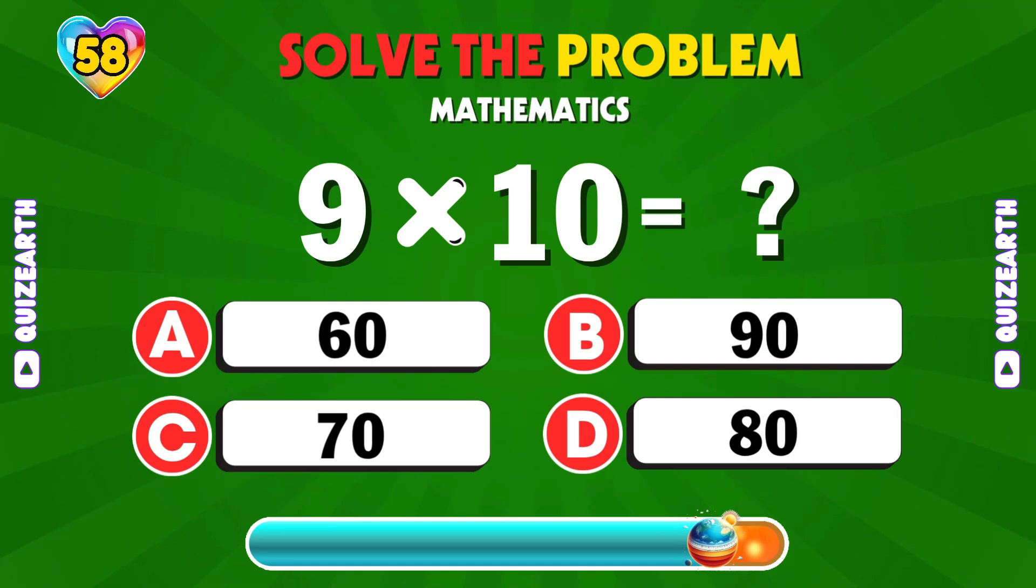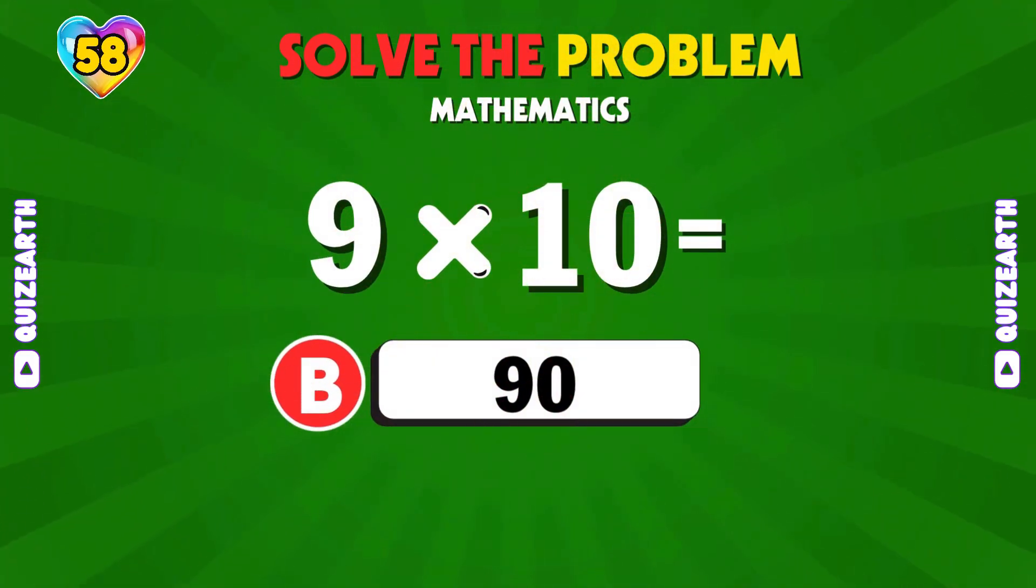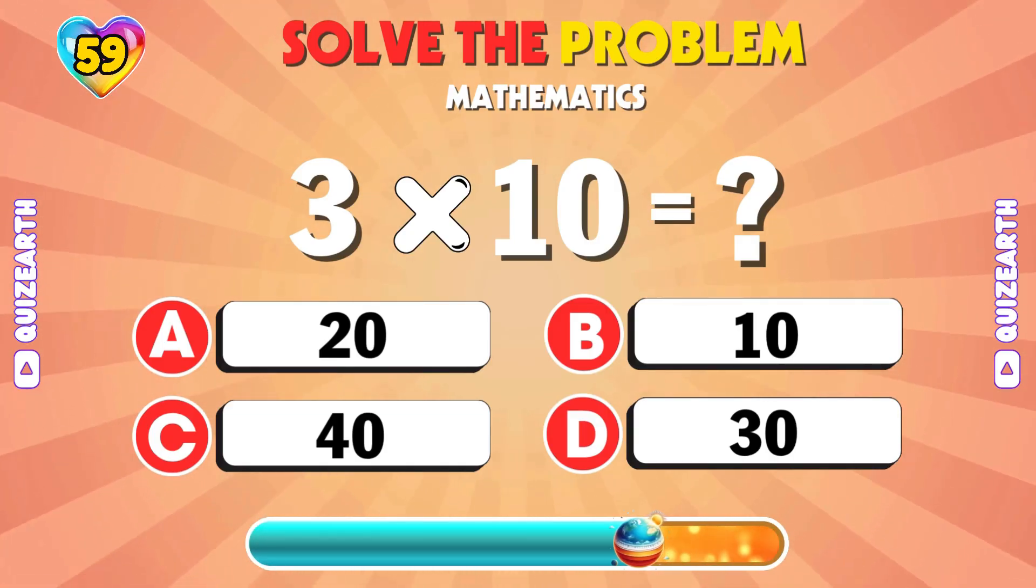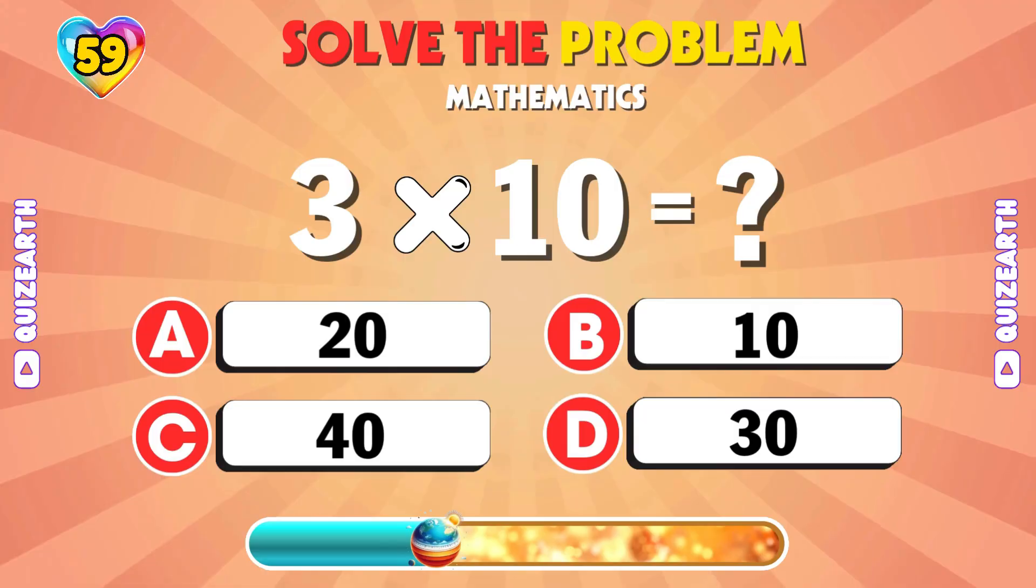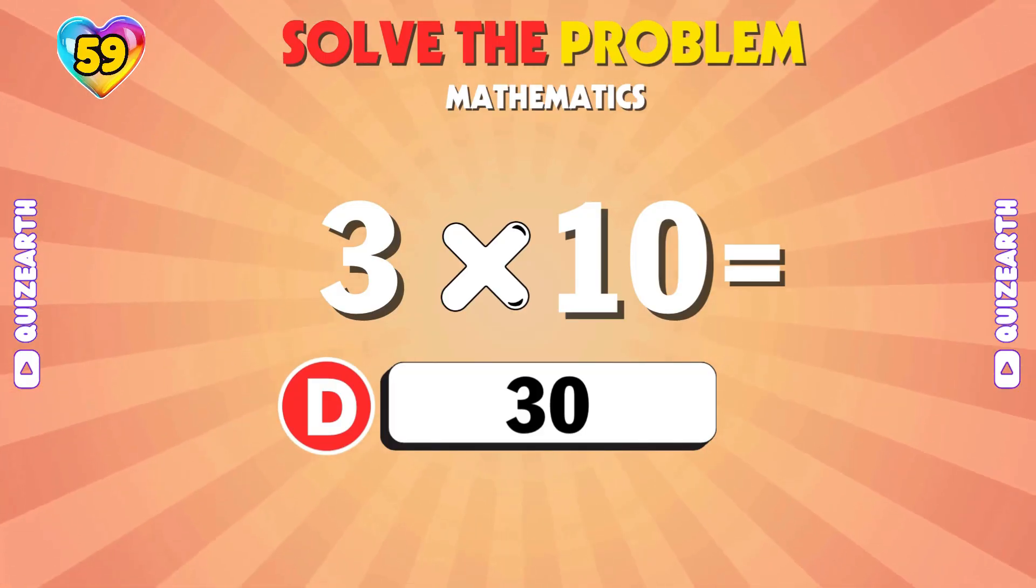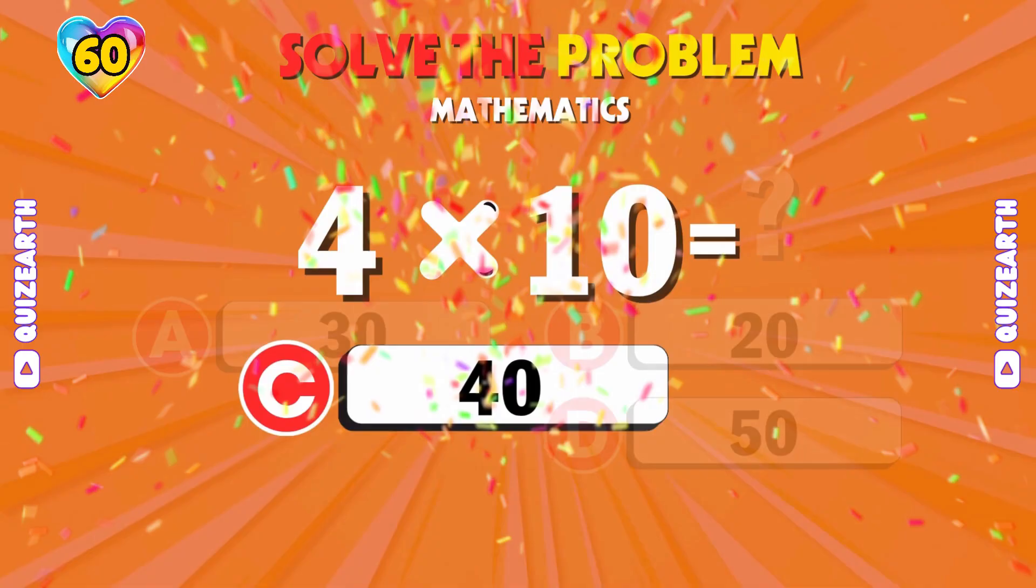Quick test, 9 times 10. 90. Let's push, 3 times 10. Final call, 30. Last one, 4 times 10. 40.